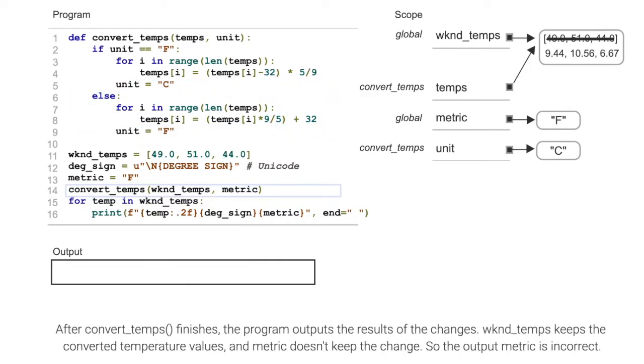After convert_temps finishes, the program outputs the results of the changes. Wknd_temps keeps the converted temperature values, and metric doesn't keep the change. So the output metric is incorrect.